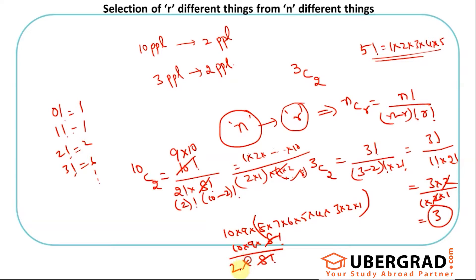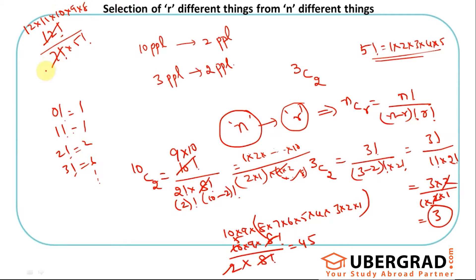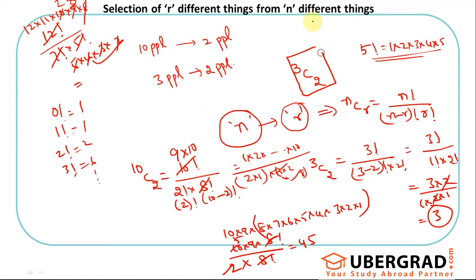So 10 × 9 divided by 2! — which is 2 × 1 = 2 — gives 90 ÷ 2 = 45. Similarly for 12! divided by 7! times 5!: cancel 7! from 12!, leaving 12 × 11 × 10 × 9 × 8, then divide by 5! = 120. The key principle: I have a bigger pool of n, I select r, and NCR gives the number of ways to form those groups.